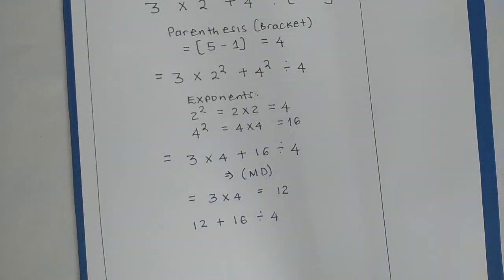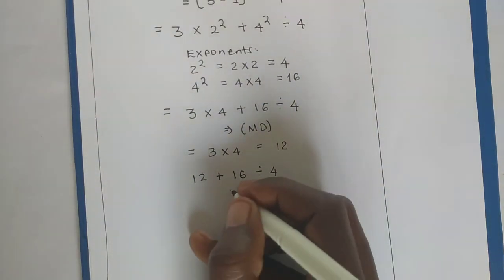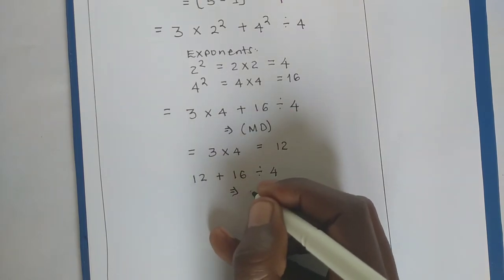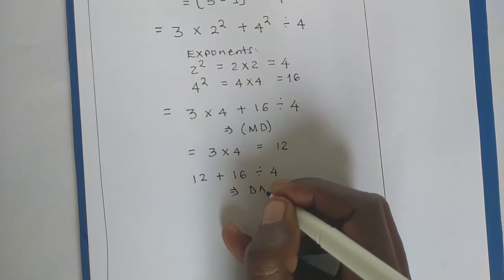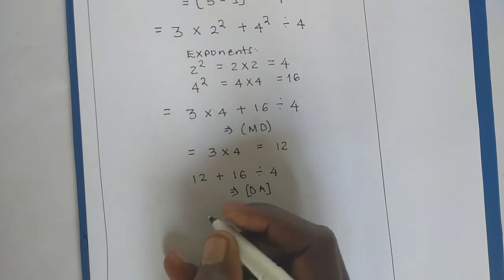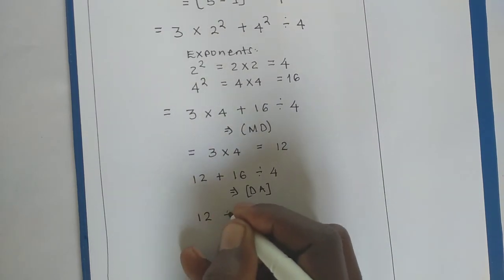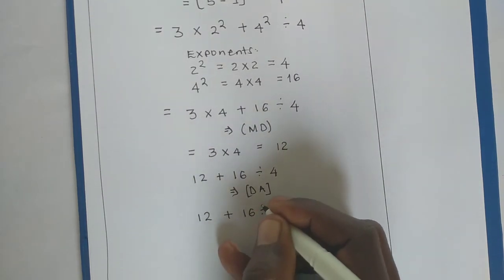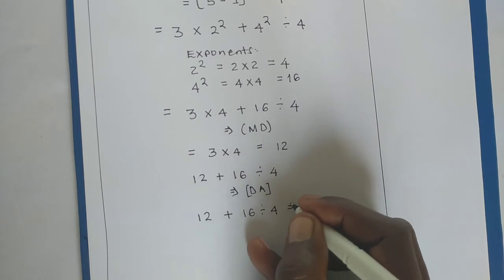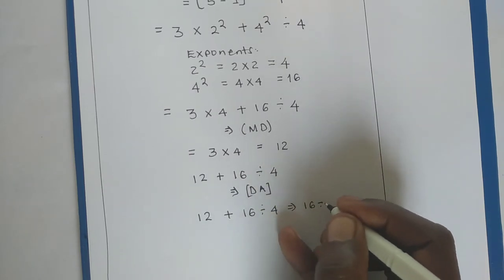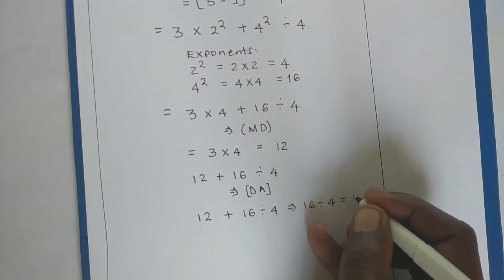Now, let's go and divide, then we add. So, we shall divide, and then we shall add. So, we shall have 12 plus 16 divided by 4. We know 16, when we divide it by 4, we shall get 4.